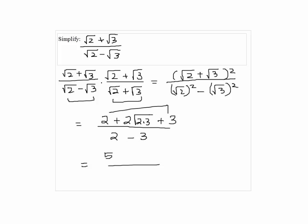So we have 5 plus 2 square root of 6 over negative 1. So the answer is negative 5 minus 2 square root of 6.